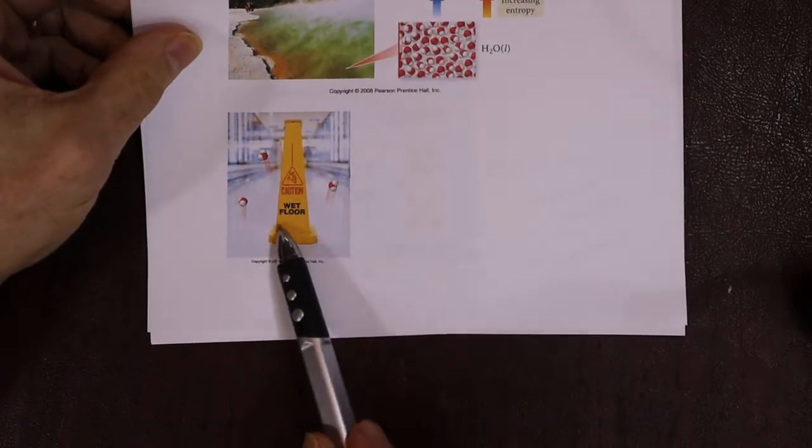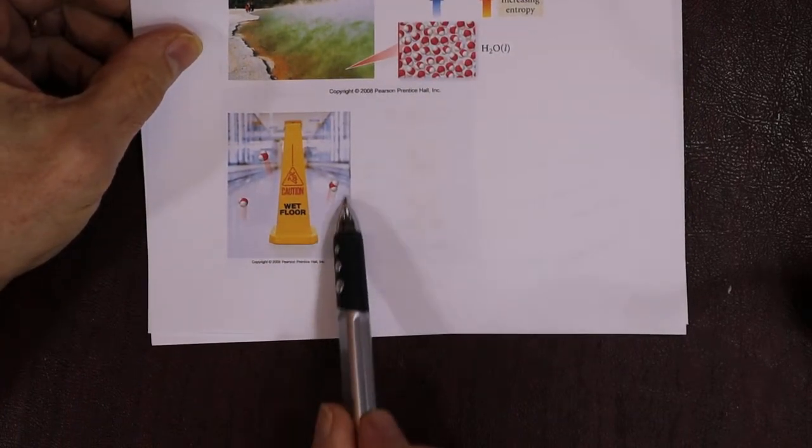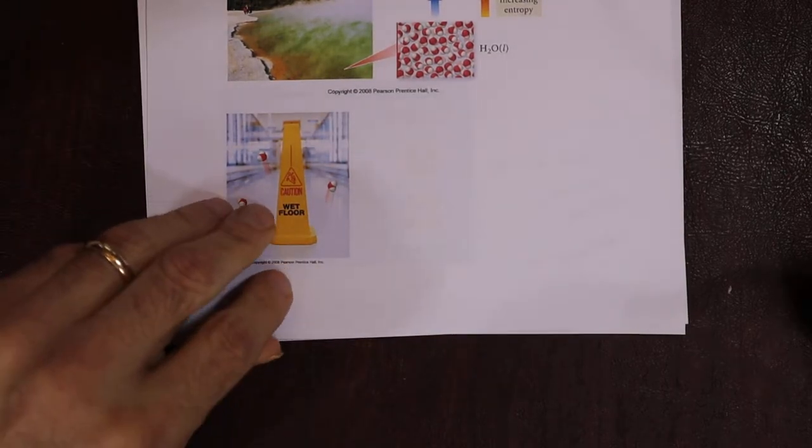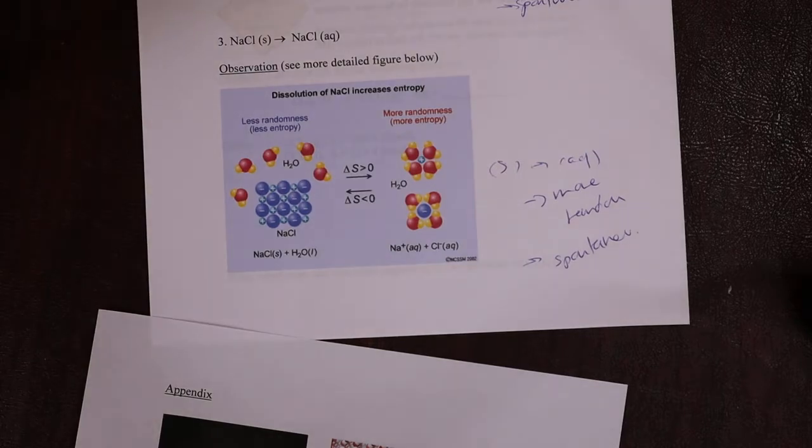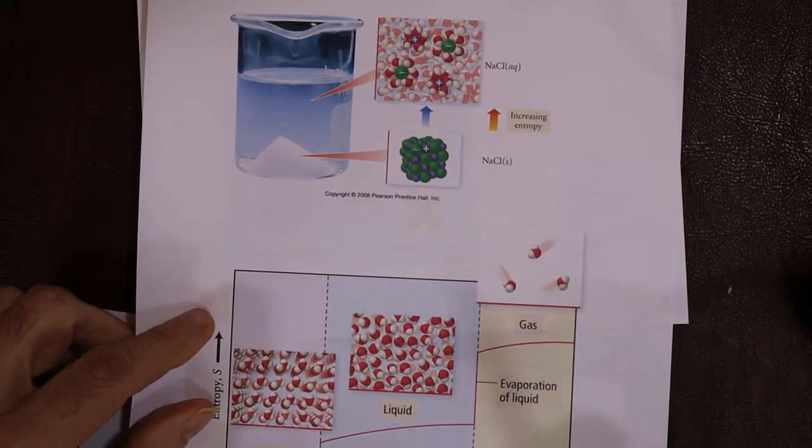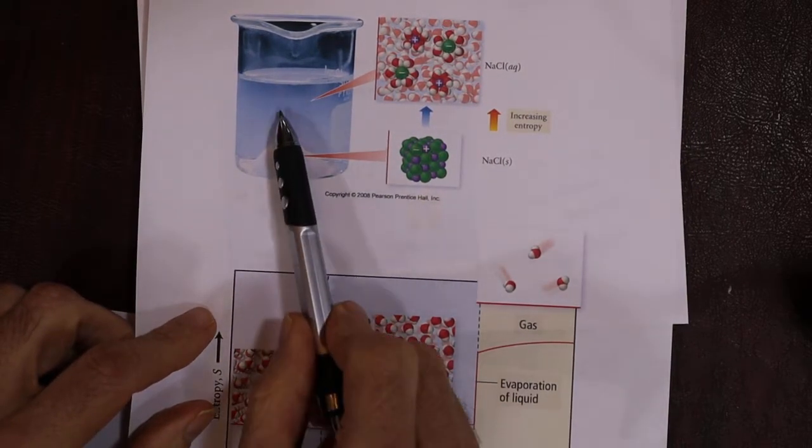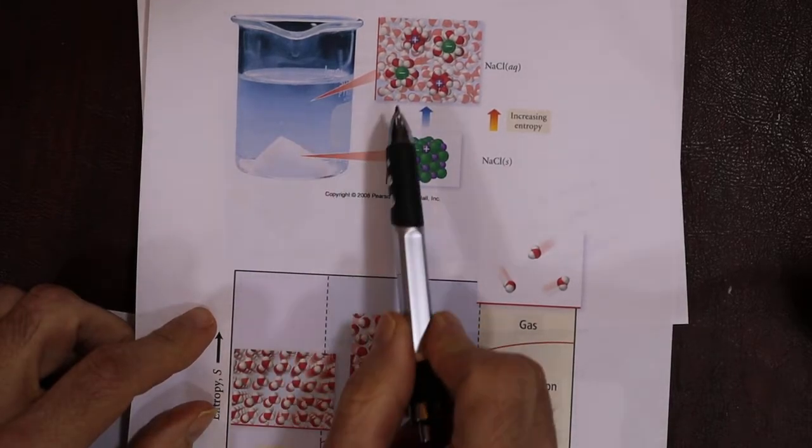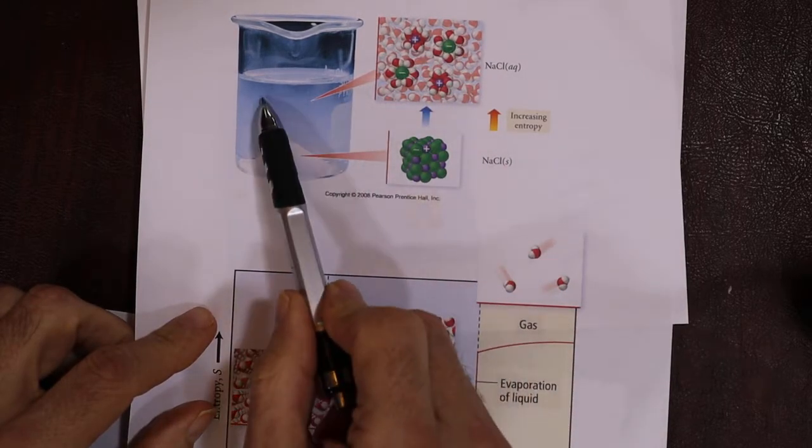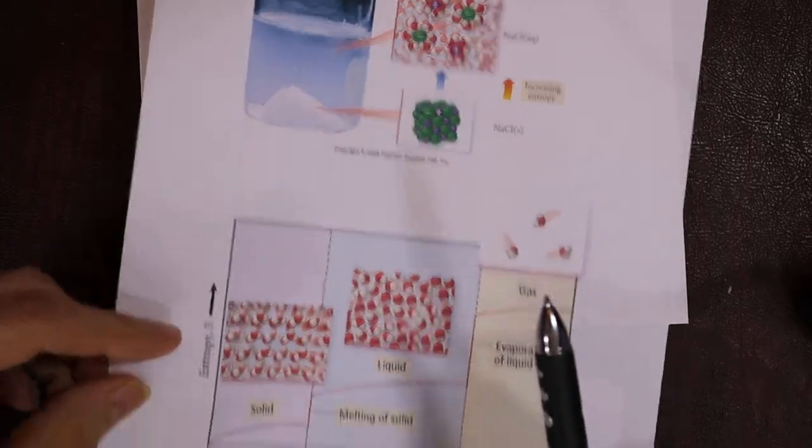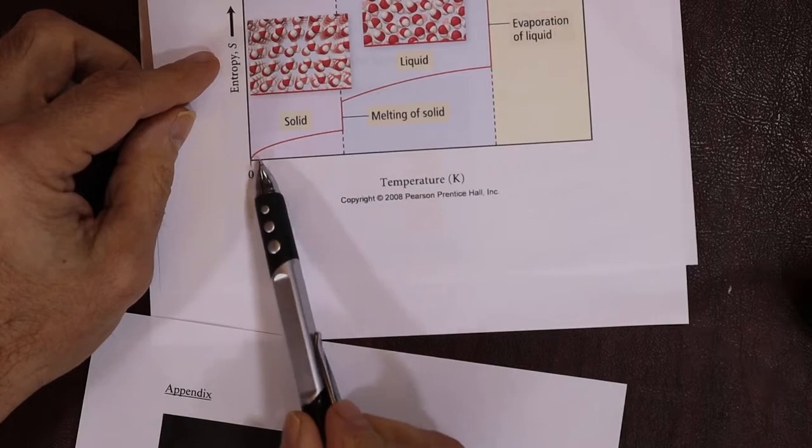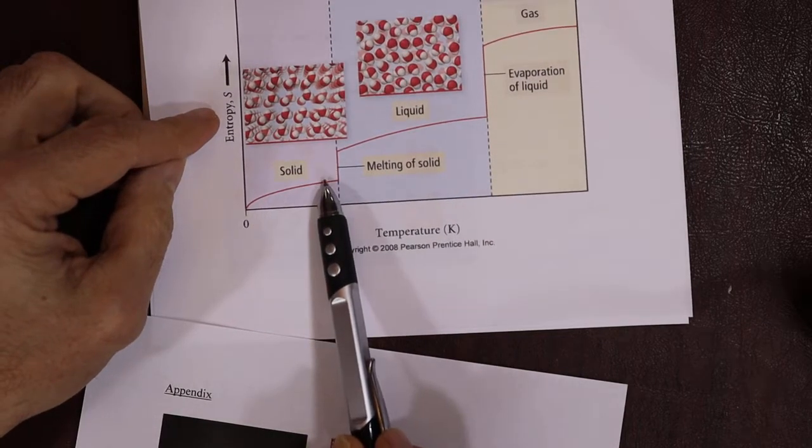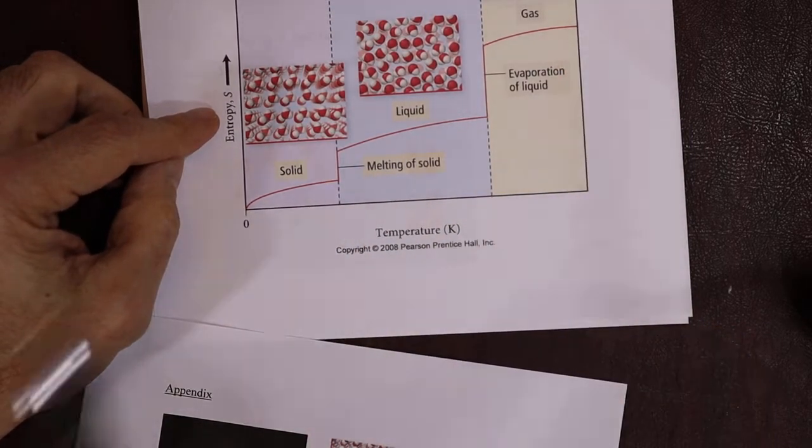So those examples are shown nicely in the appendix. Here's one. Turning a solid into a liquid increases entropy. These things are more randomized than they are stuck in this kind of rigid crystalline framework. Turning a liquid to a gas, again, more randomized. So changes of state. Solid is the least randomized. Liquid more, gas the most.